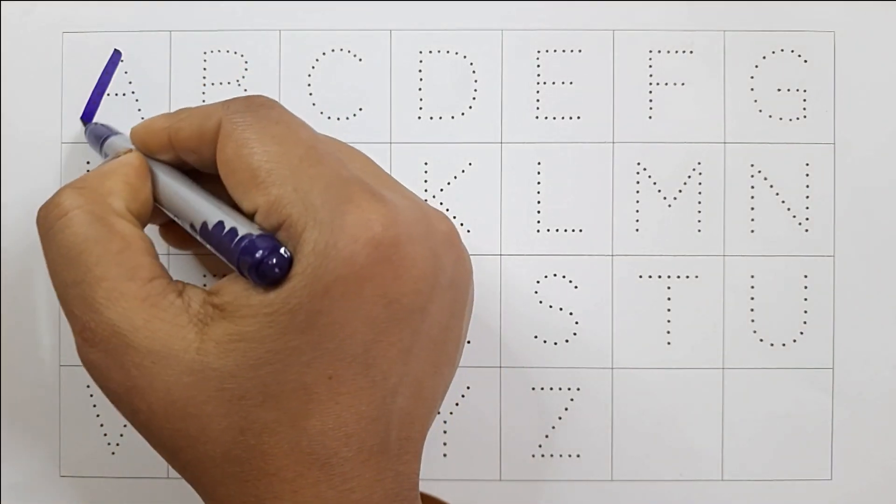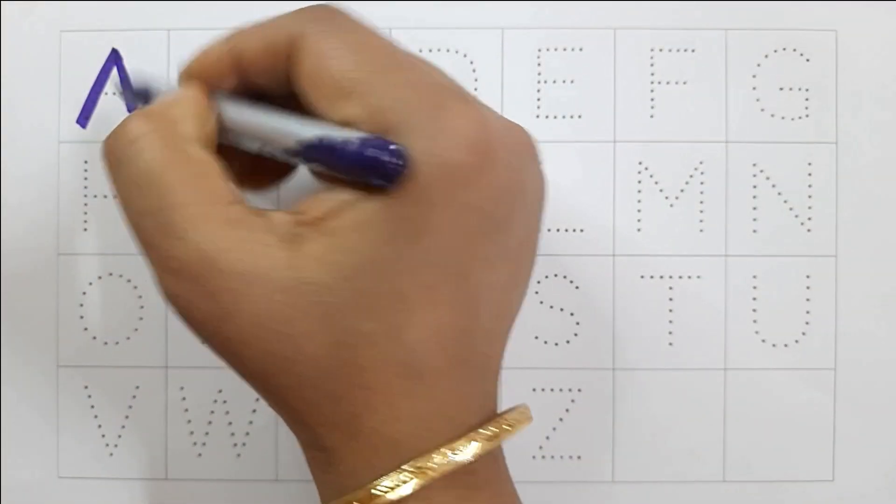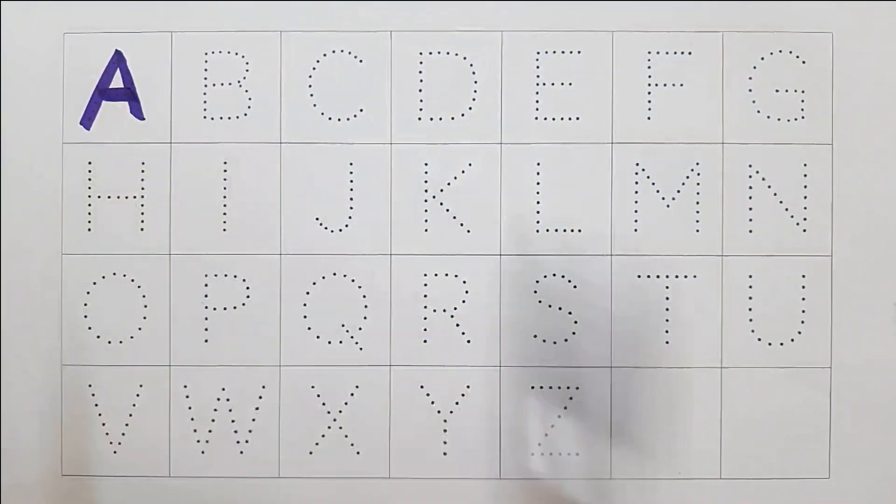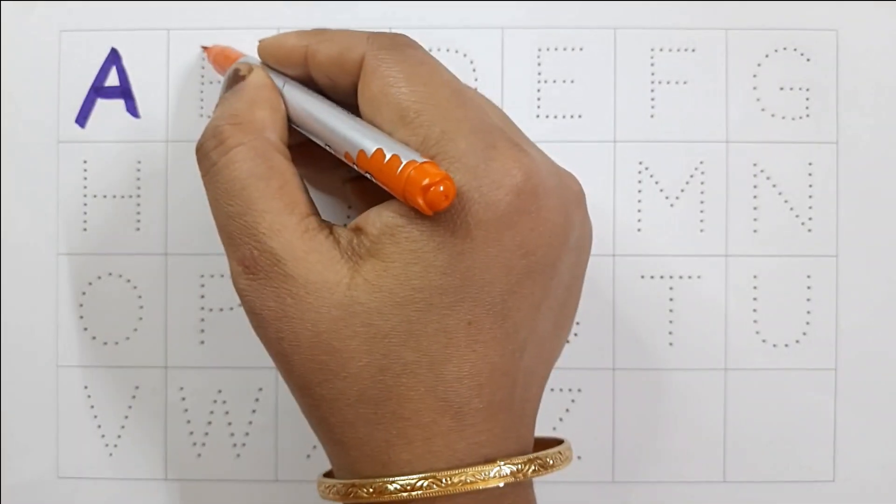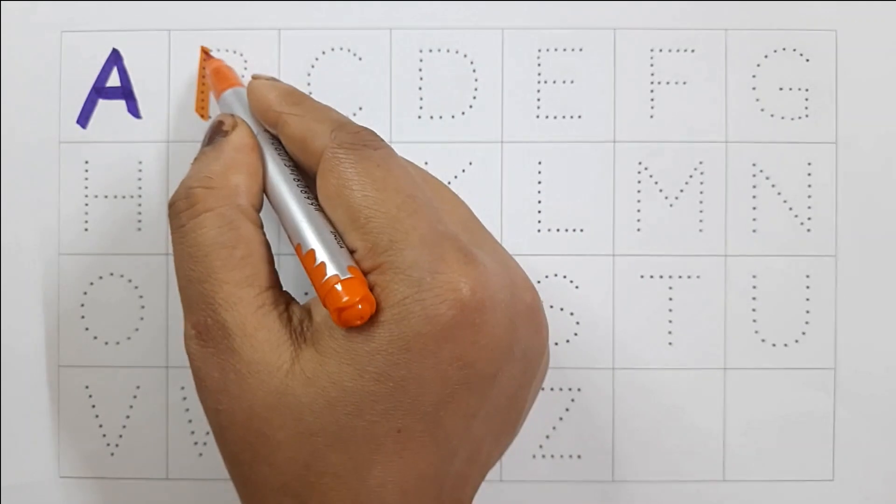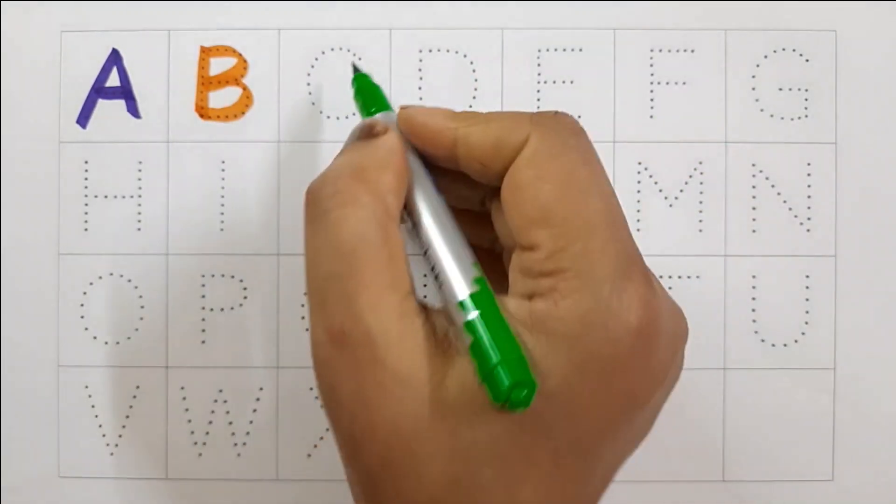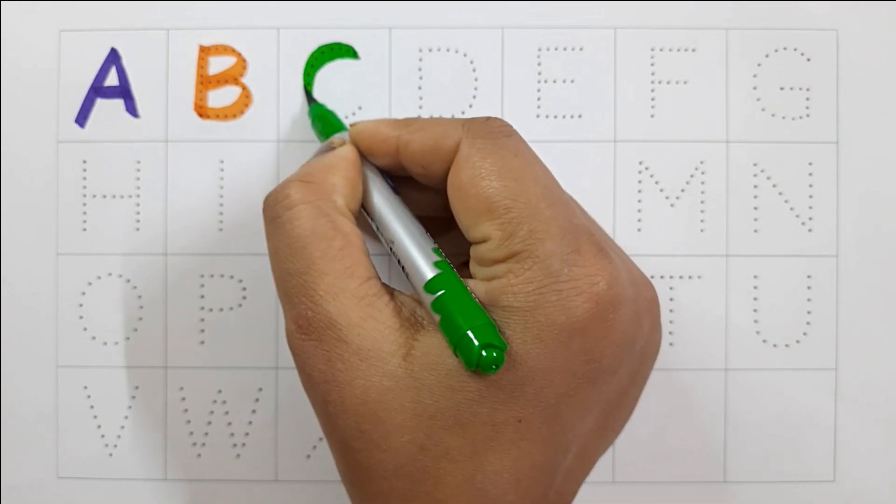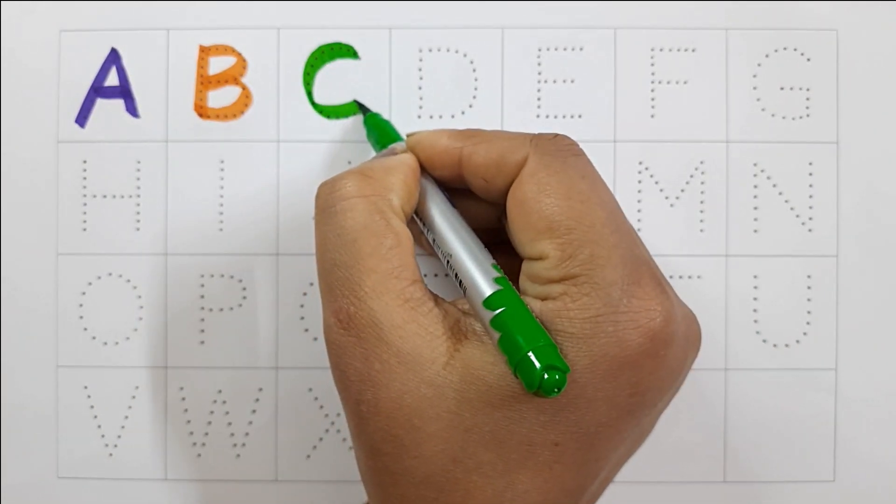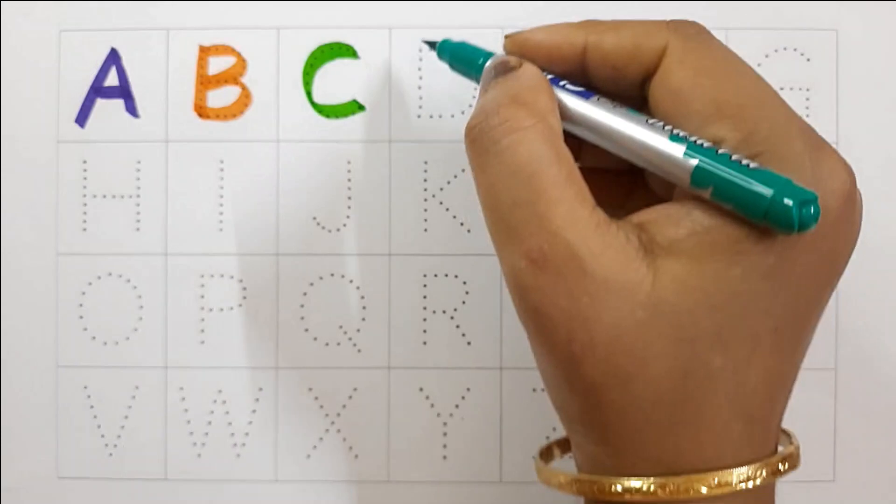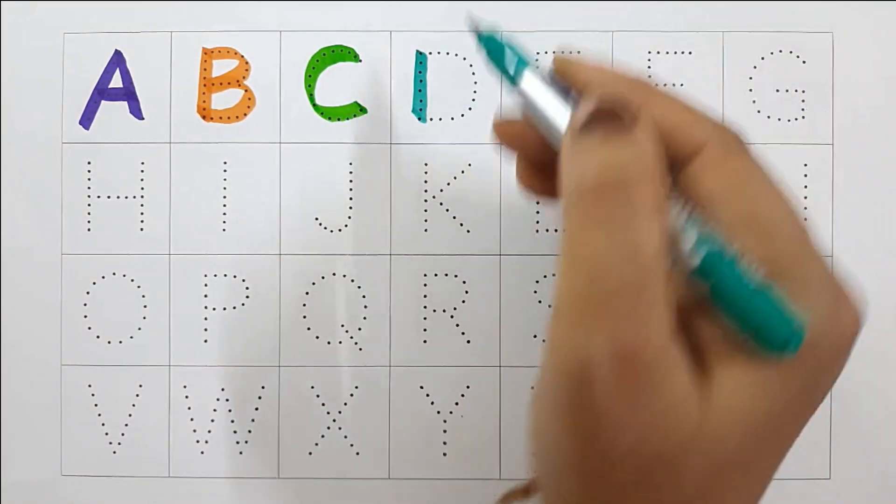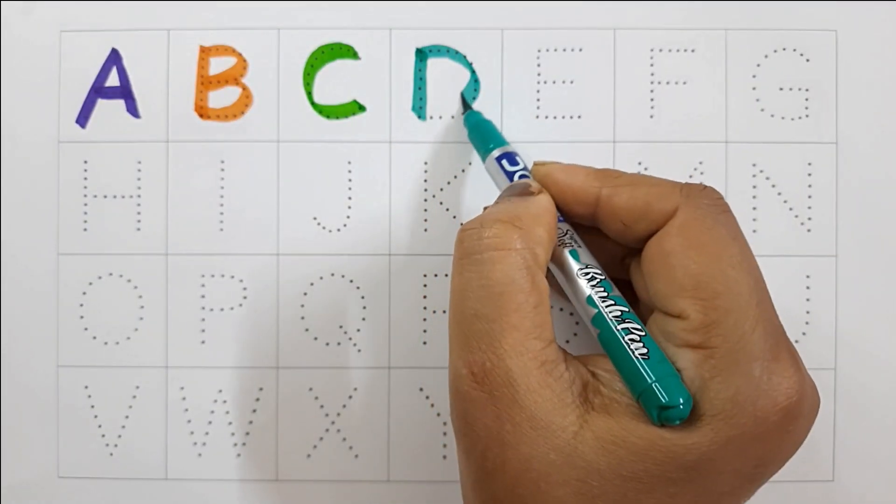A. A for airplane. B. B for bat. C. C for car. D. D for dog.